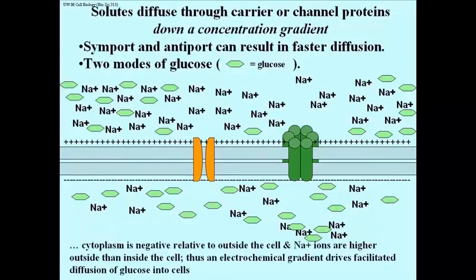So there it is. Cytoplasm is negative relative to the outside of the cell and the sodium ions are higher in concentration outside the cell than inside, which is a great setup for this electrochemical gradient to force facilitated diffusion of glucose into cells.